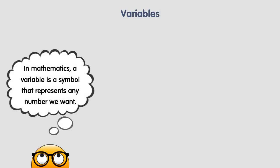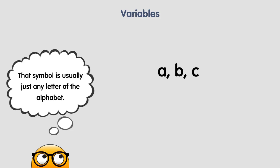In mathematics, a variable is a symbol that represents any number we want. That symbol is usually just any letter of the alphabet.